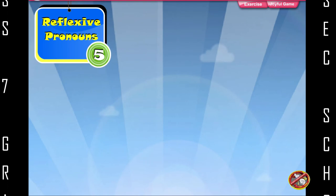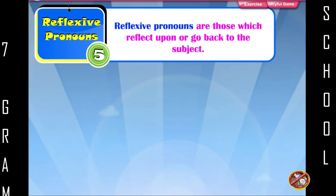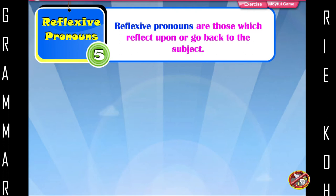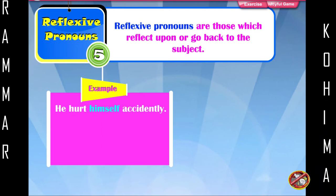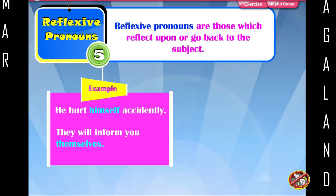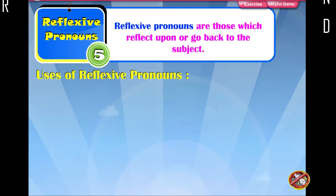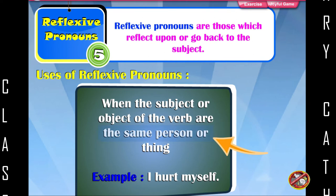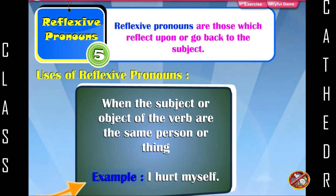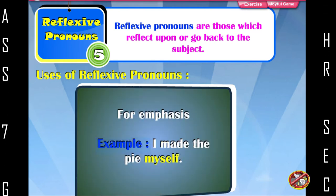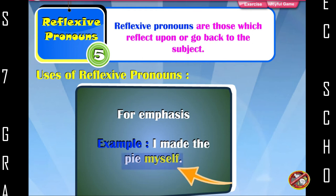Reflexive pronouns are those which reflect upon or go back to the subject. Example: He hurt himself accidentally. They will inform you themselves. Uses of reflexive pronouns: when the subject or object of the verb are the same person or thing — example: I hurt myself — or for emphasis — example: I made the pie myself.